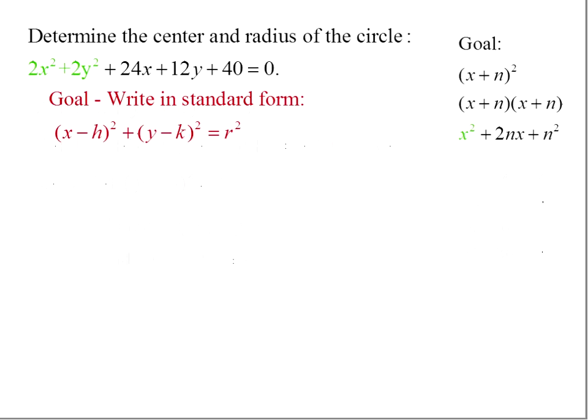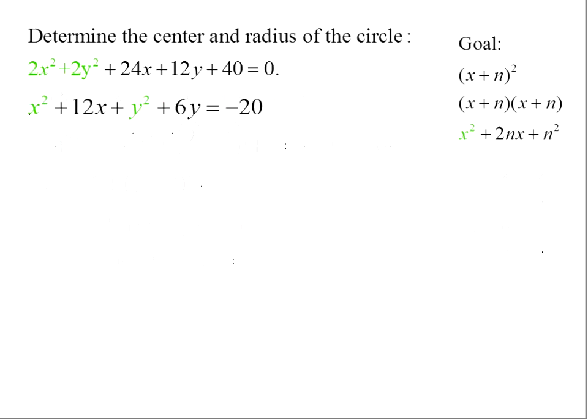Let's look at this. To start with, notice that we have a 2 in front of our x² and likewise a 2 in front of our y². We want to remove that to get into this goal form, and so we're going to divide all terms by 2. When we divide by 2, we end up with x² + y² + 12x + 6y + 20 = 0.